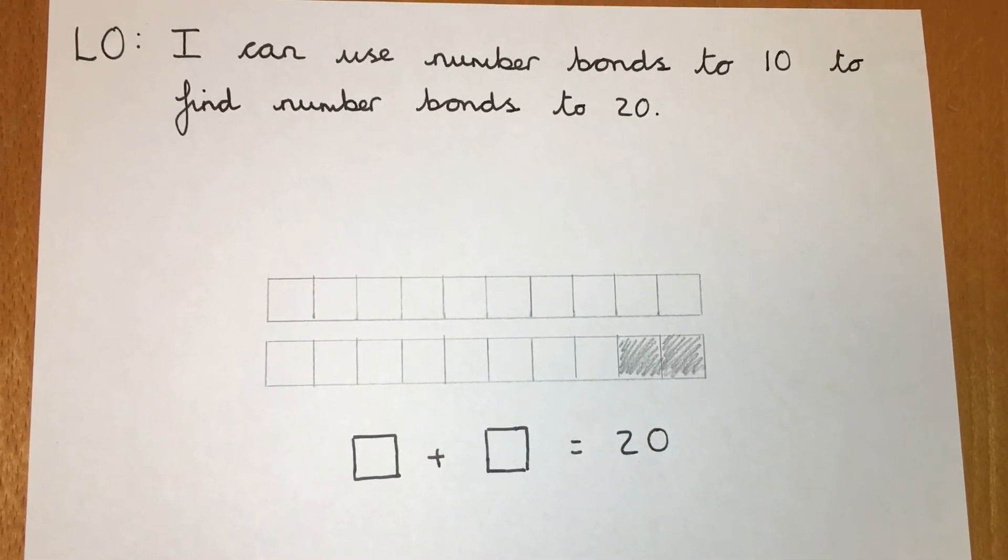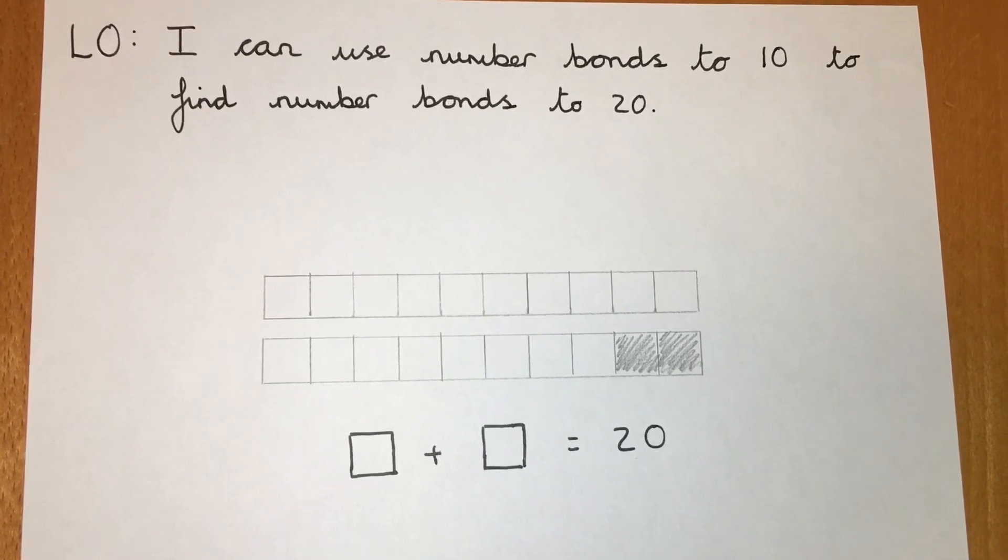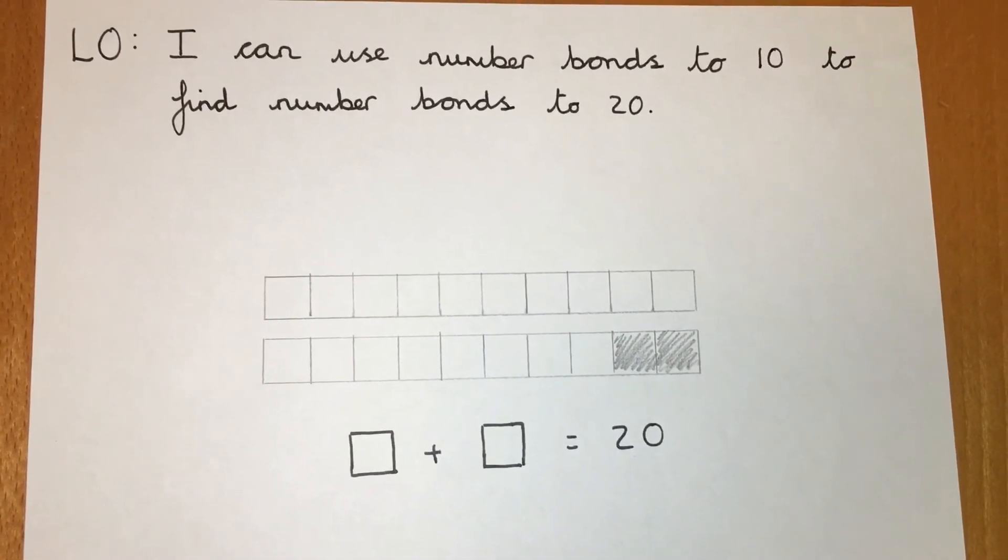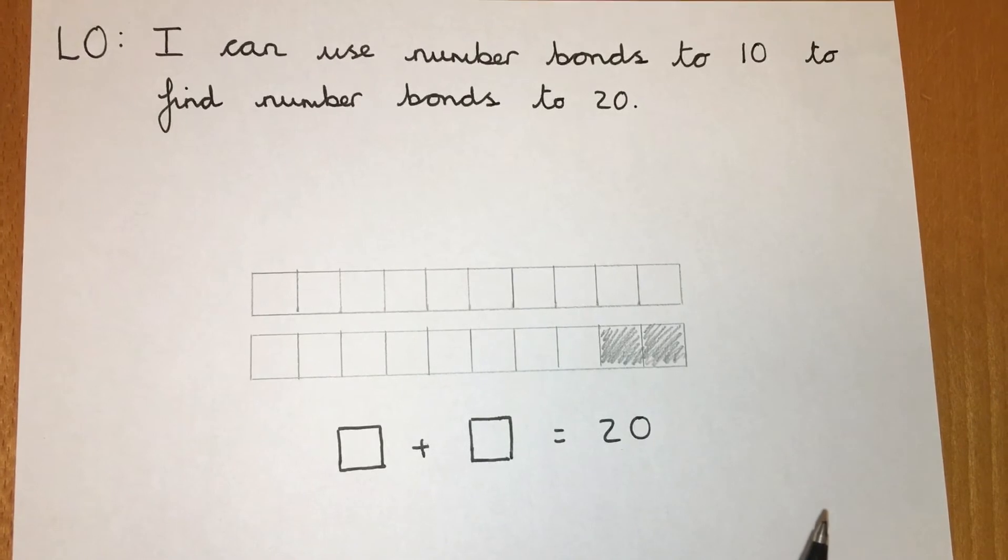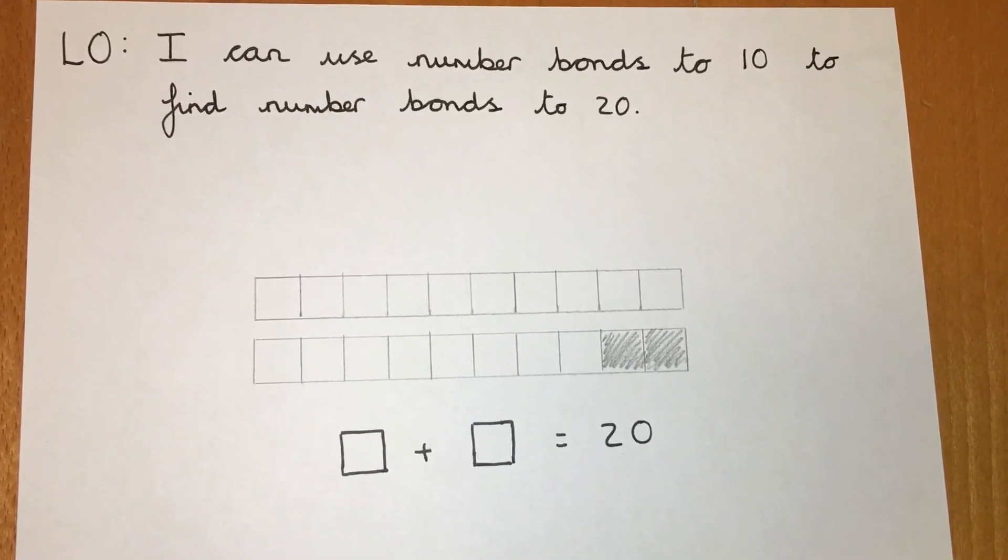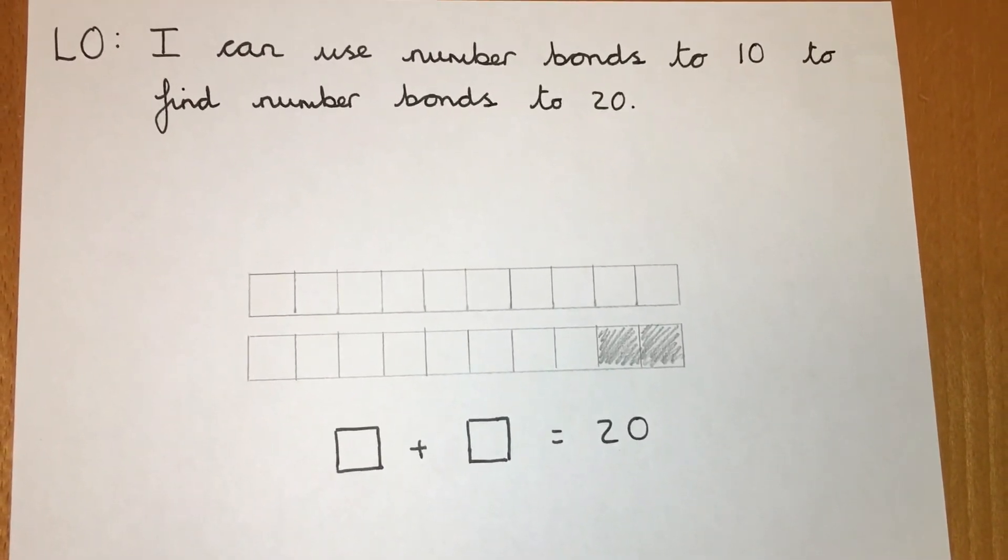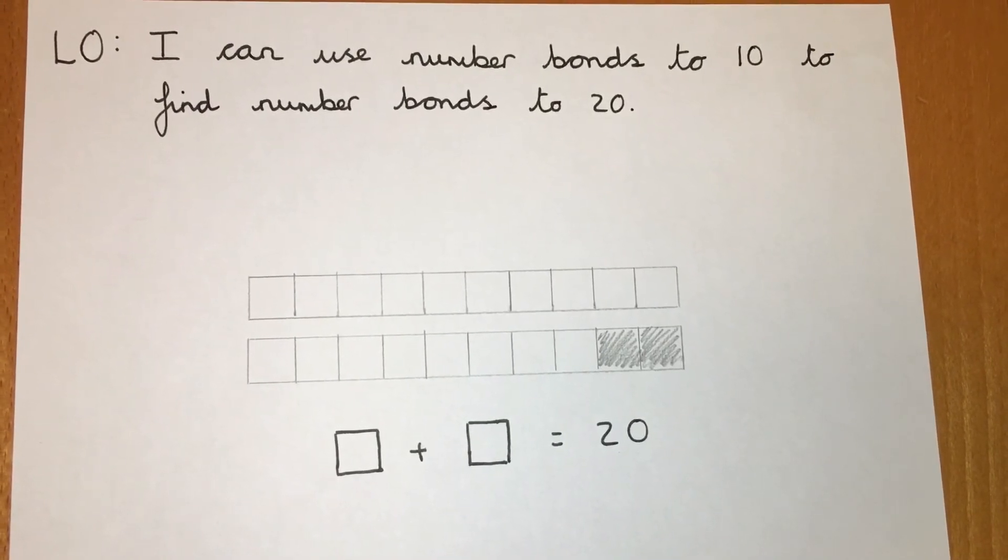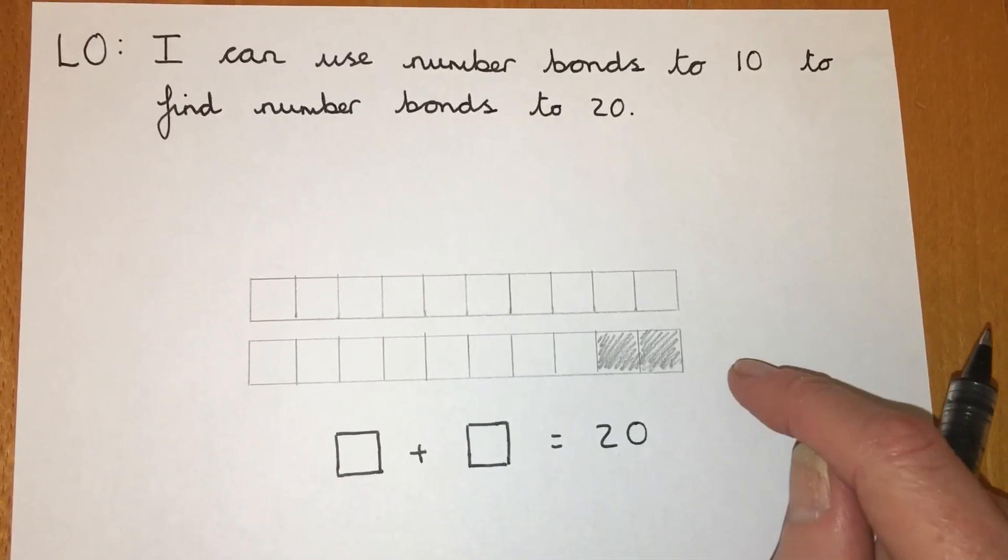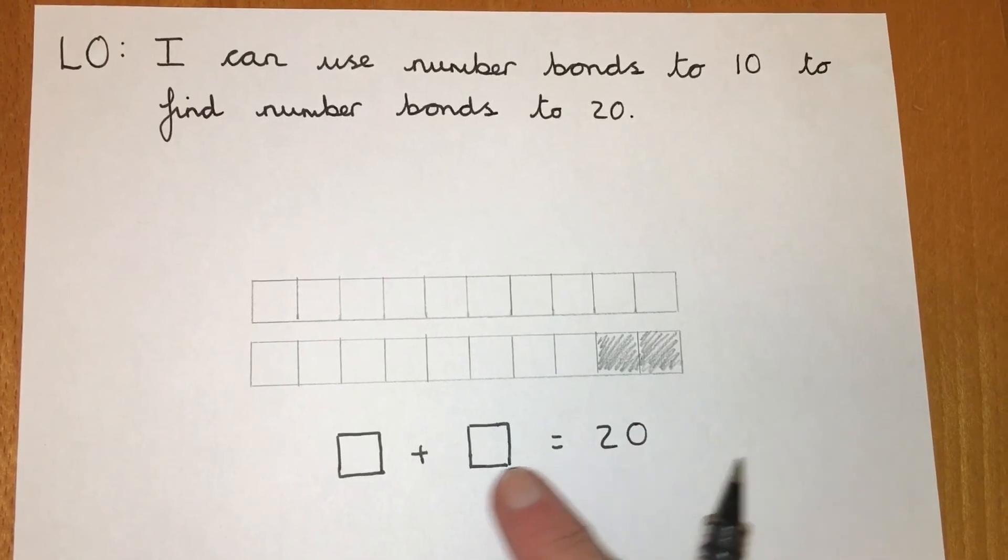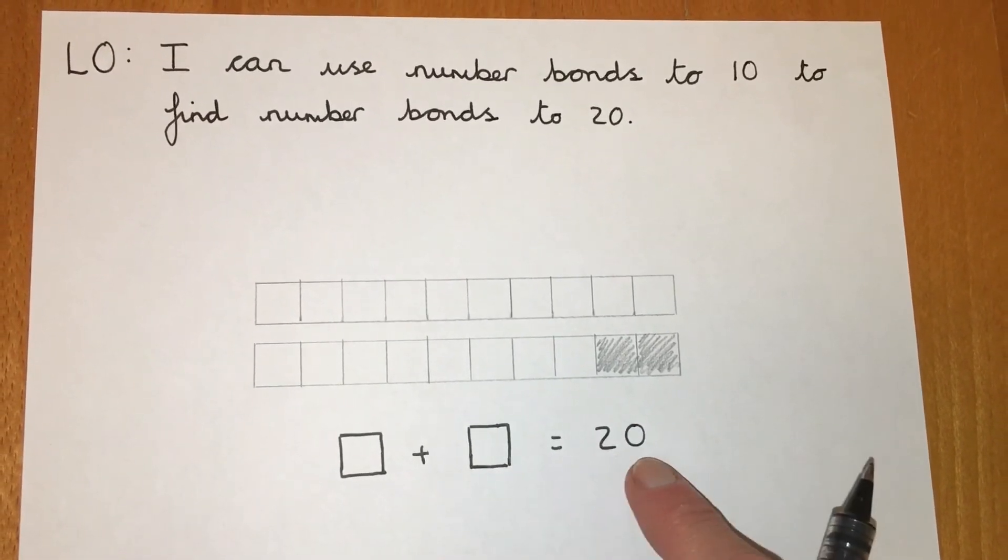Your worksheet today looks a bit like this. If you are working on the sheet, you can just fill in these boxes. And if you're working on paper, just write out each number sentence that you see. So what number bond to 20 do we see represented with these sticks of cubes? Well, we know that it's something plus something equals 20.